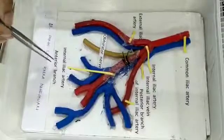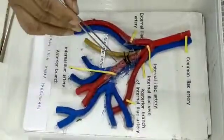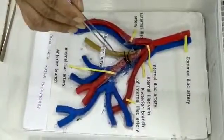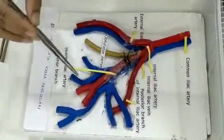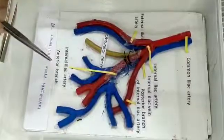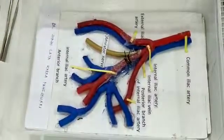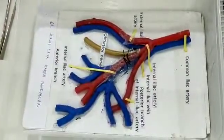This is the anterior branch of the internal iliac artery, which is the portion where we apply the ligation on the internal iliac artery.